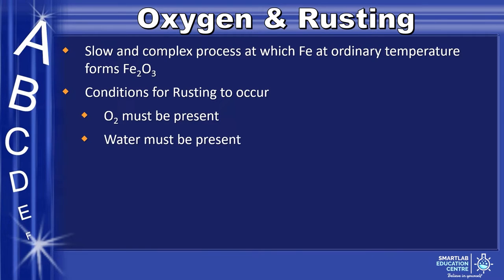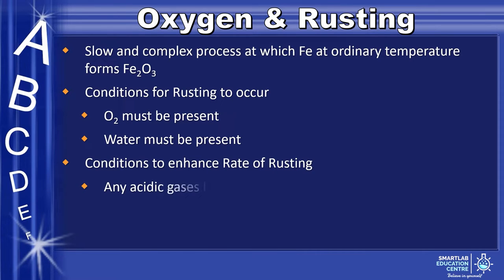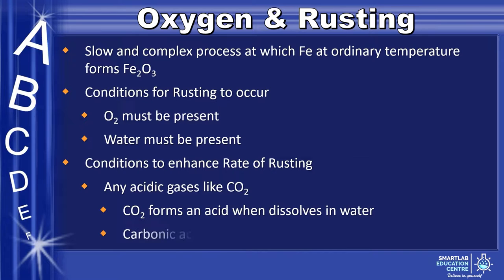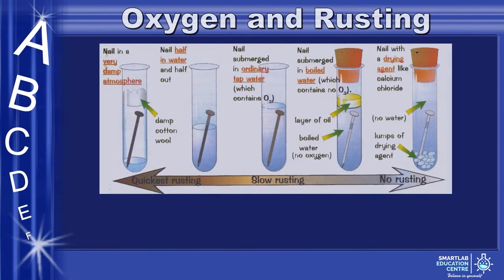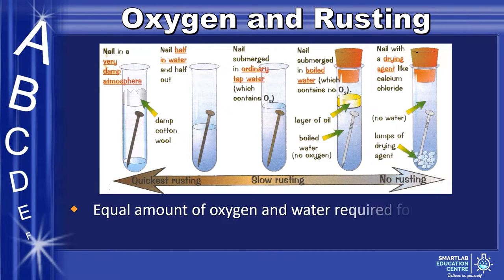The conditions that enhance the rate of rusting include when acidic gases are added. An example is where carbon dioxide forms an acid when dissolved in water, or carbonic acid. This diagram shows what conditions would result in the quickest rusting or no rusting, and keep in mind that equal amounts of oxygen and water are required for an enhanced rate of rusting.